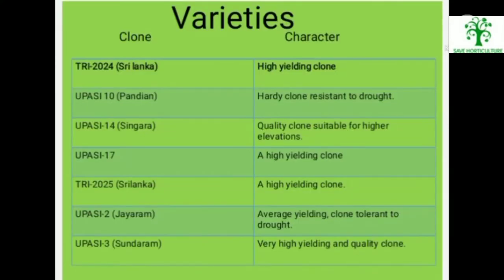Tea grows in the plains of north-eastern states, but in south India it is grown in hilly ranges from 600 to 2200 metres above mean sea level. Varieties — clone and character. First variety: TRI-2024 from Sri Lanka, character is high yielding clone.